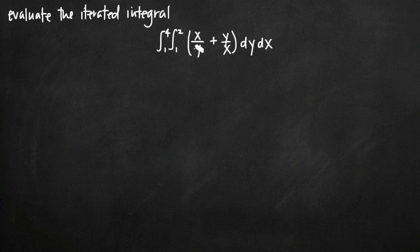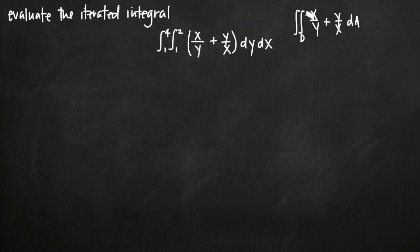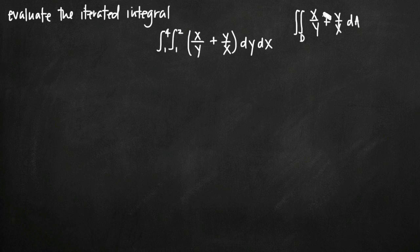Iterated integrals are really just a method for evaluating double integrals. Sometimes you'll see double integrals written with two integral signs over some region D, with the function x over y plus y over x, and then dA. The difference is that the iterated integral tells us specifically that we're integrating first with respect to y, then with respect to x, one at a time, with separate limits of integration already provided.